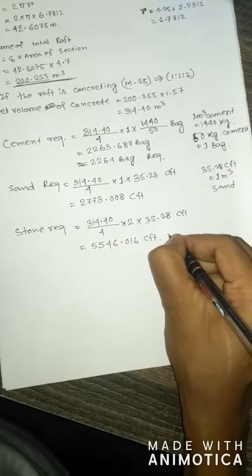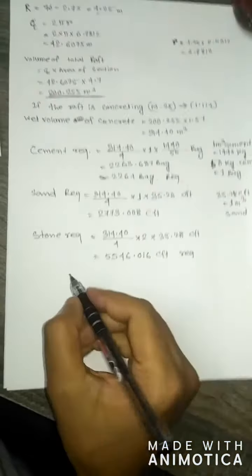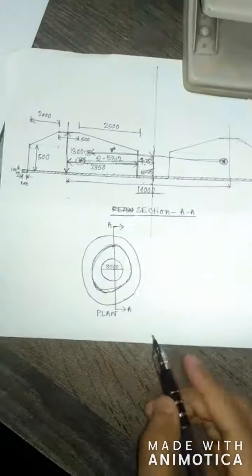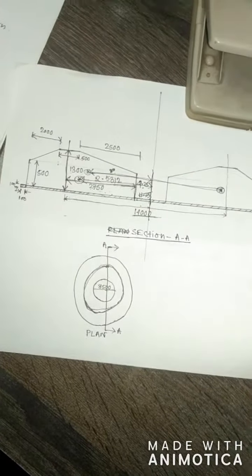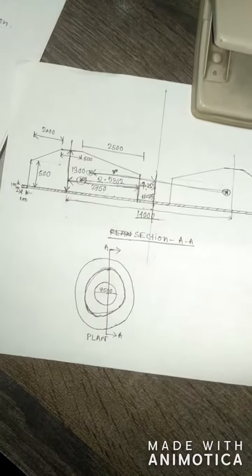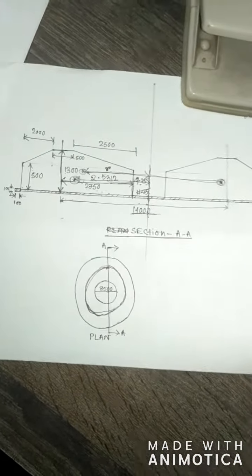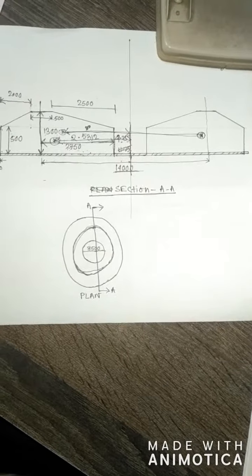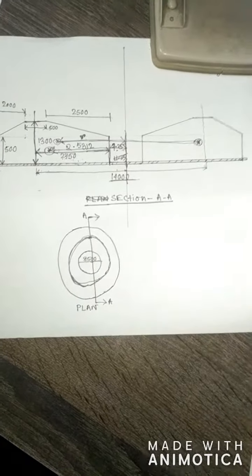Stone required equals 314.40 divided by 4, into proportion 2, into 35.28 CFT, equal to 5546.016 CFT of stone required.